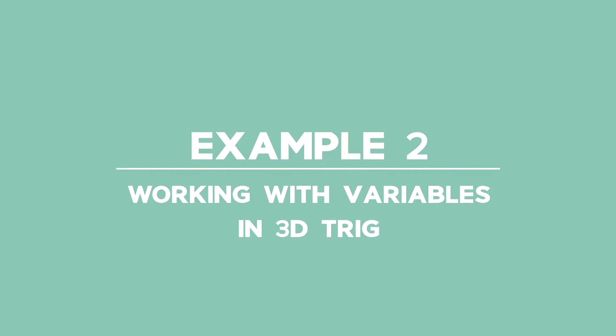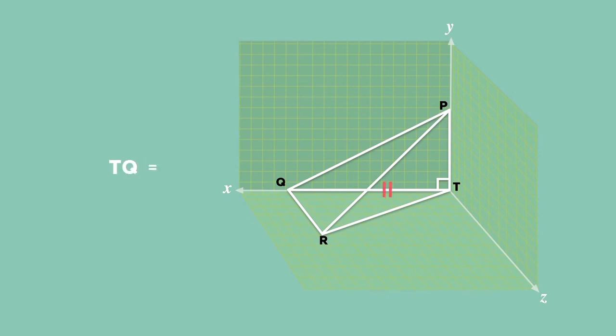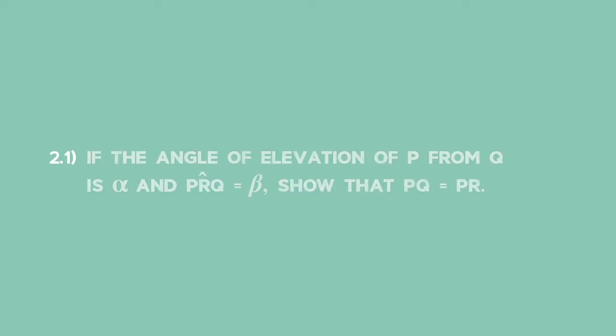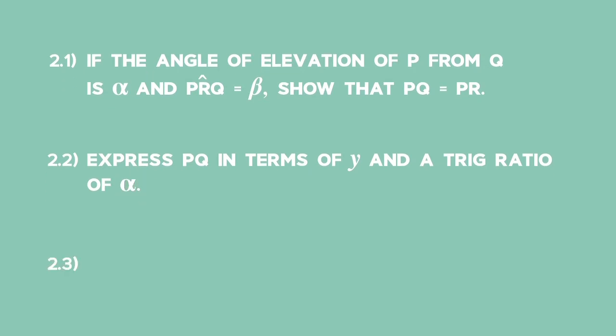Example 2: working with variables in 3D trig. In the figure, Q, T and R are points in the horizontal plane such that TQ equals TR equals Y and TP represents a vertical pole positioned at T. Question 2.1: If the angle of elevation of P from Q is alpha and angle PRQ is equal to beta, show that PQ is equal to PR. Question 2.2: Express PQ in terms of Y and a trig ratio of alpha. Question 2.3: Prove that QR is equal to the ratio 2Y cos beta divided by cos alpha.